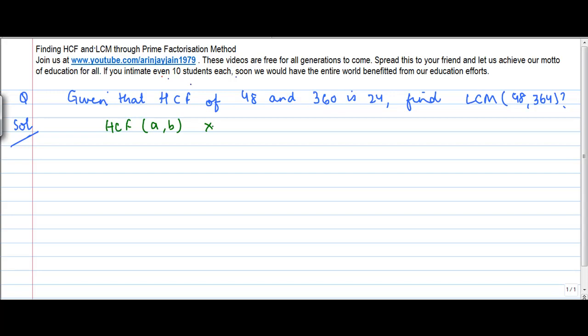What that formula said was that the HCF of a, b when multiplied by LCM of a, b is equal to a times b, if a and b are two positive integers.